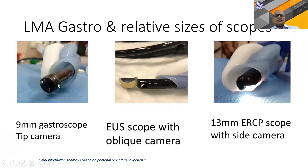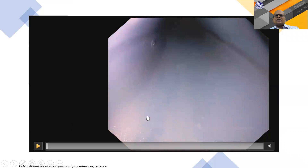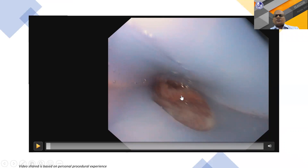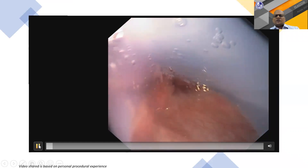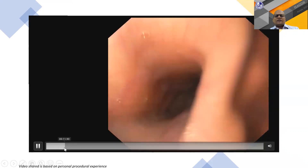Understanding relative scope sizes is important. The gastroscope has a tip-facing camera and is only 9 mm, so it passes very easily. The EUS scope is 13 mm with an oblique-facing camera, and the ERCP scope is 13 mm with a side-facing camera. As the scope travels through the LMA channel, the lumen is perfectly circular initially but becomes oval in the oropharynx—this is one reason for resistance that endoscopists need to understand. Once negotiated past this point, the scope enters the esophagus without difficulty.